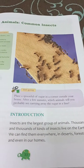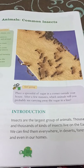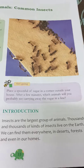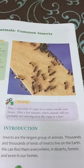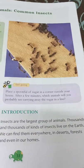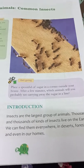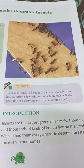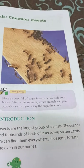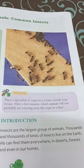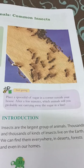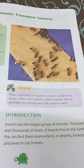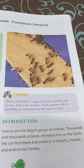Today we will see another new chapter — animals: common insects. We are going to study about insects. Insects are the largest group of animals; thousands and thousands of kinds of insects live on the earth. We can see them everywhere, whether they are in the jungle or forest.